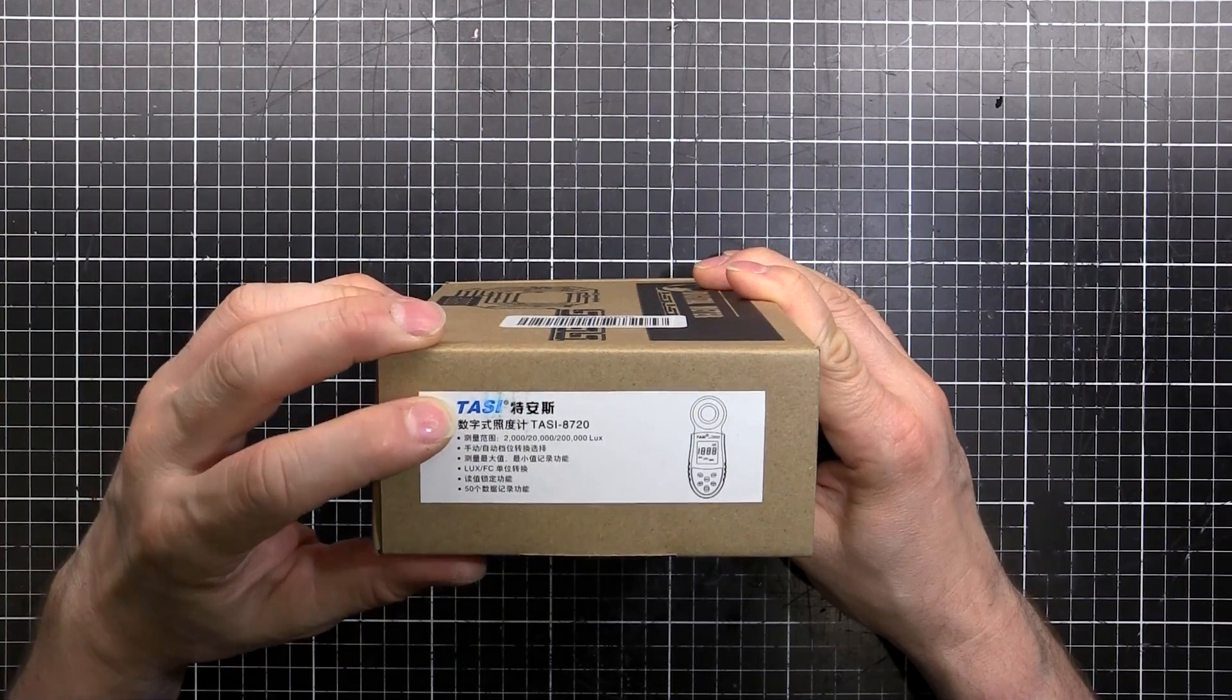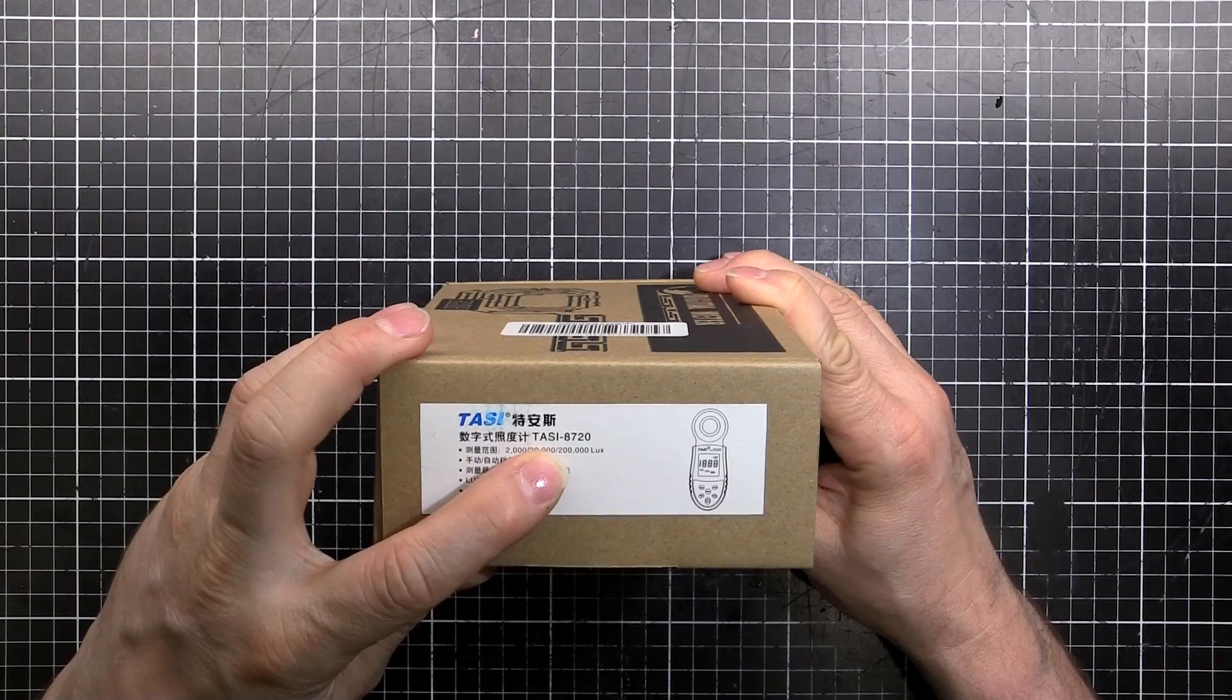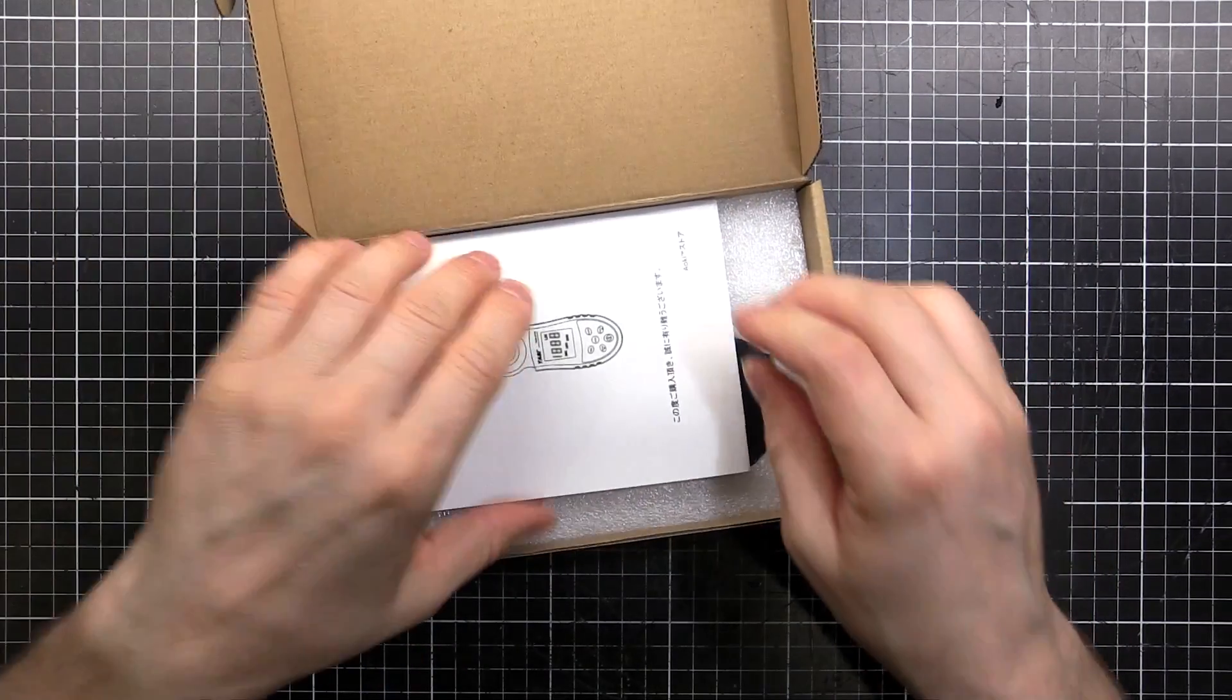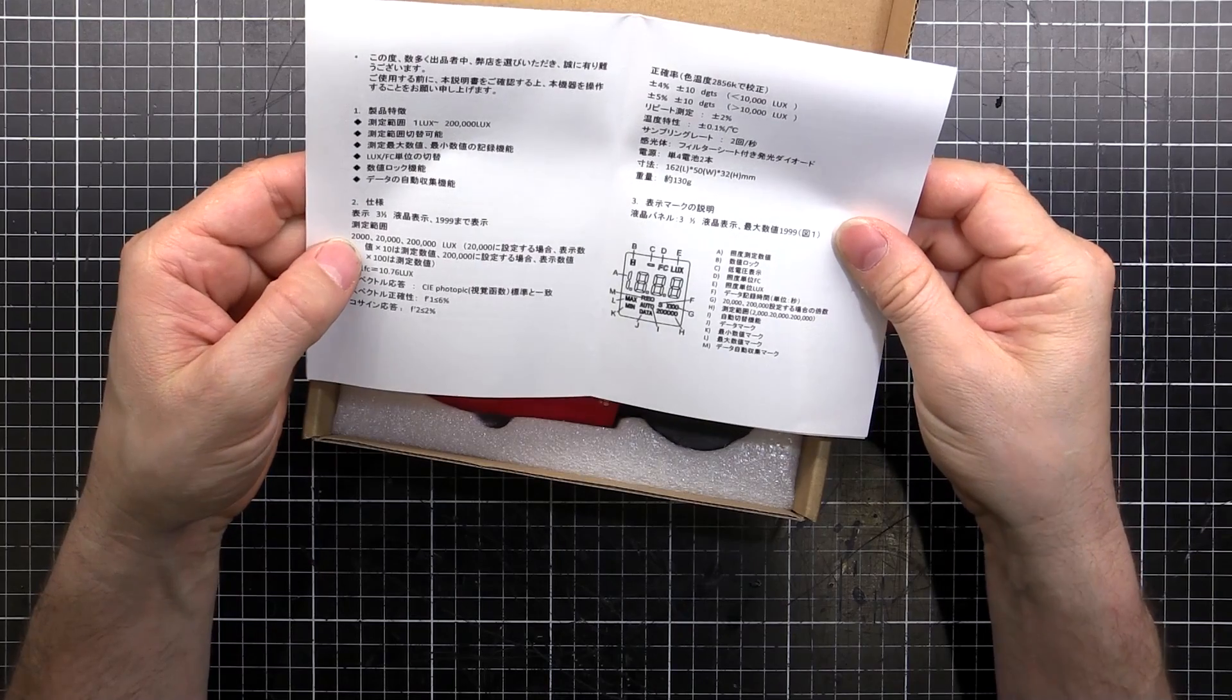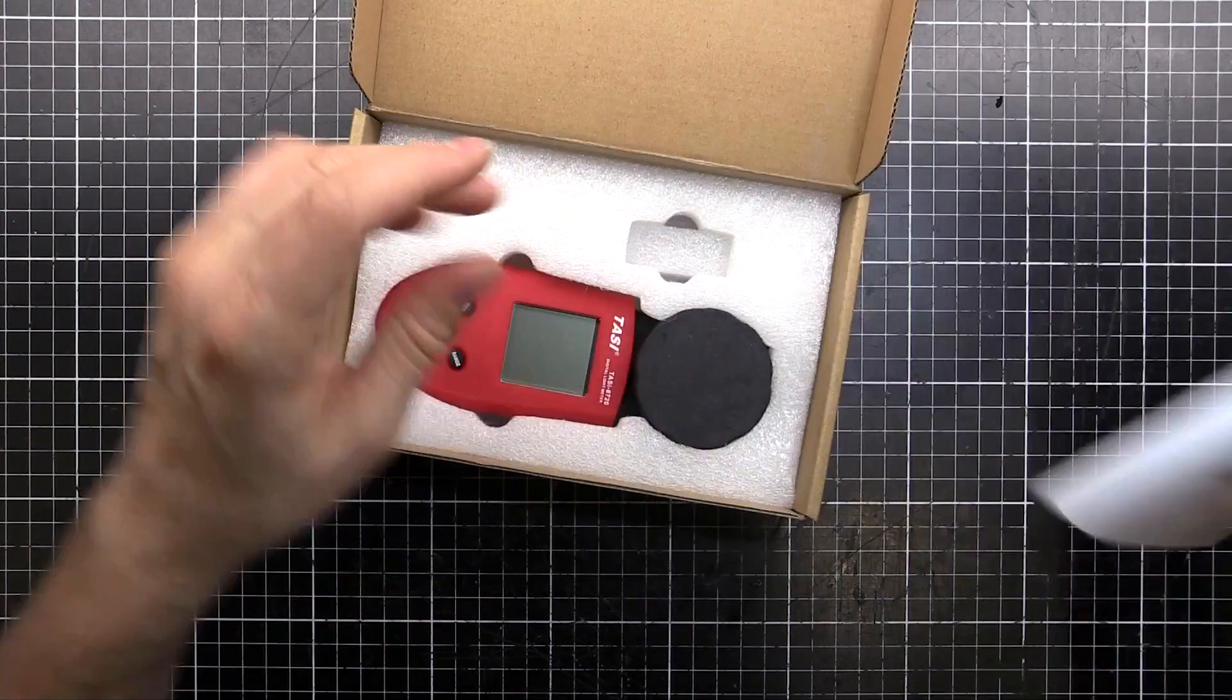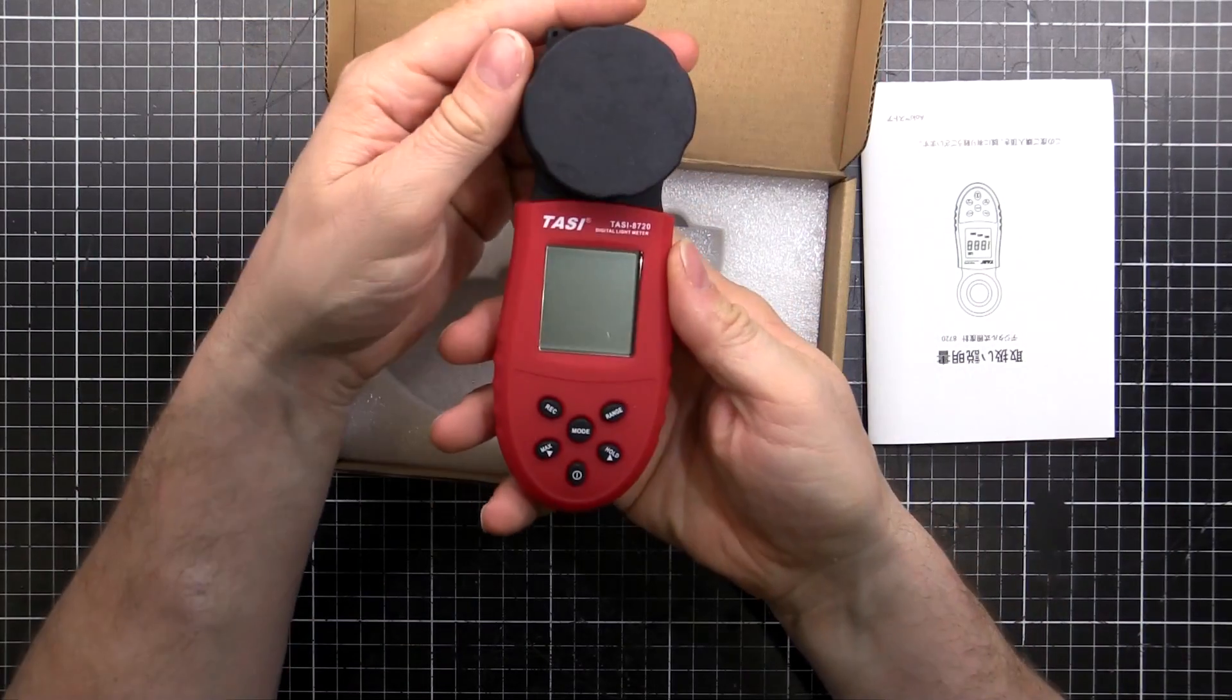TASI seems to be the brand, and it's a TASI 8720 is the model number. So there's a few different ranges. In the box we've got the manual. The ranges we get, 20,000 and 200,000 lux. Anyway, we'll look at that in a bit, because this is a product.